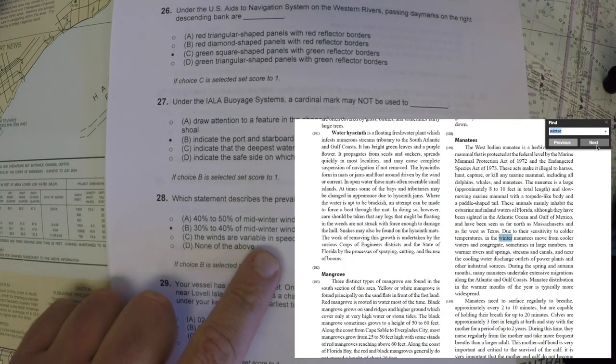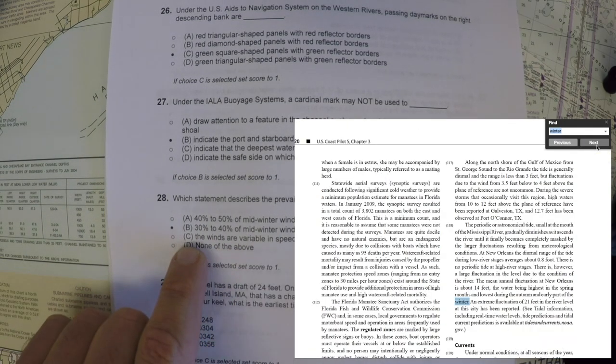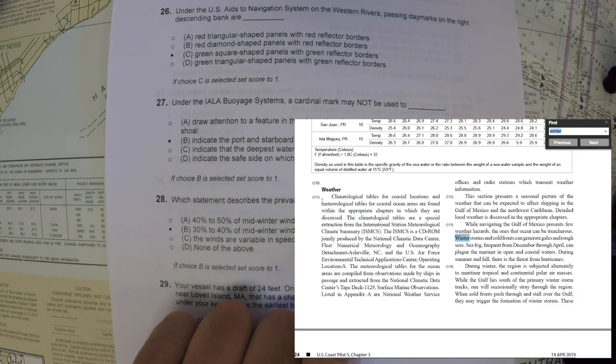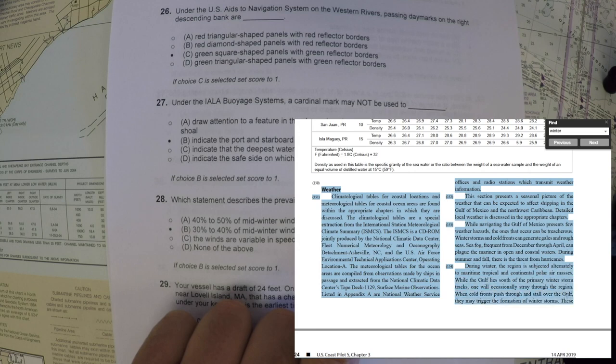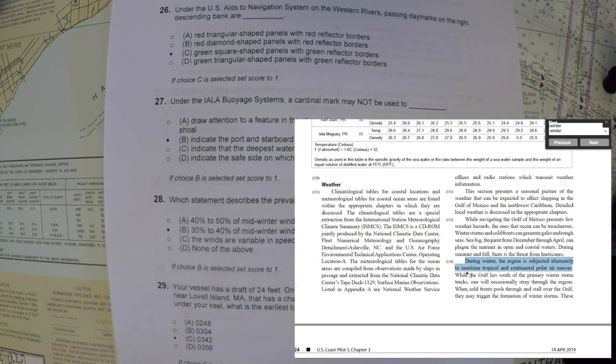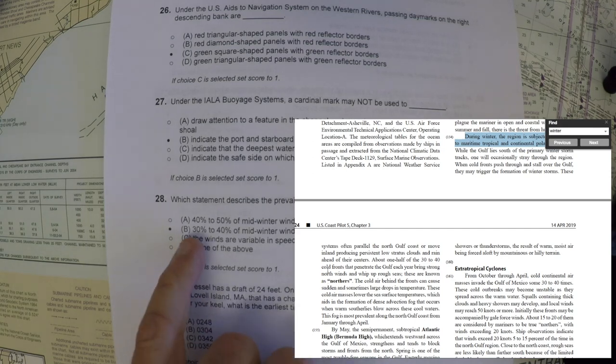So the winds are definitely not variable, definitely not strongest in March, so C is out. So the choice is between A and B, and I know that the winds generally don't flow from the south at that point. The north is where the winter cold fronts are that come through, so that was my guess.